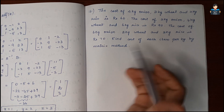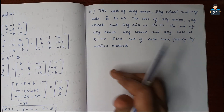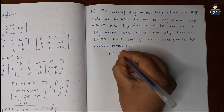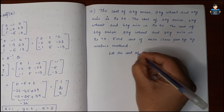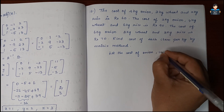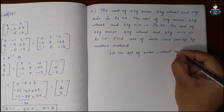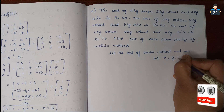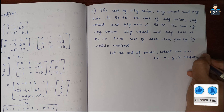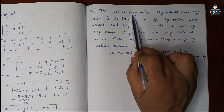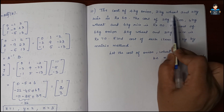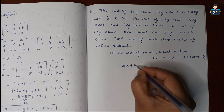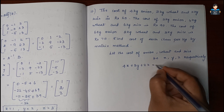For this one, we will have a system of equations. We will form this question. Let the cost of onion, wheat, and rice be X, Y, Z respectively. Our first statement is 4 kg onion, 3 kg wheat, and 2 kg rice is Rs. 60. So: 4X + 3Y + 2Z = 60.